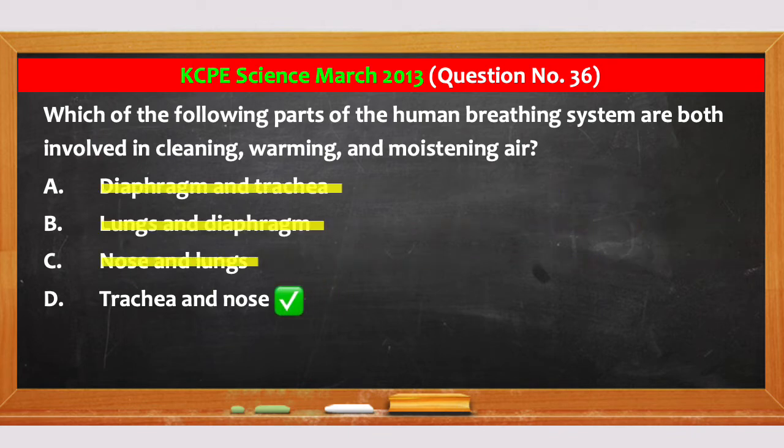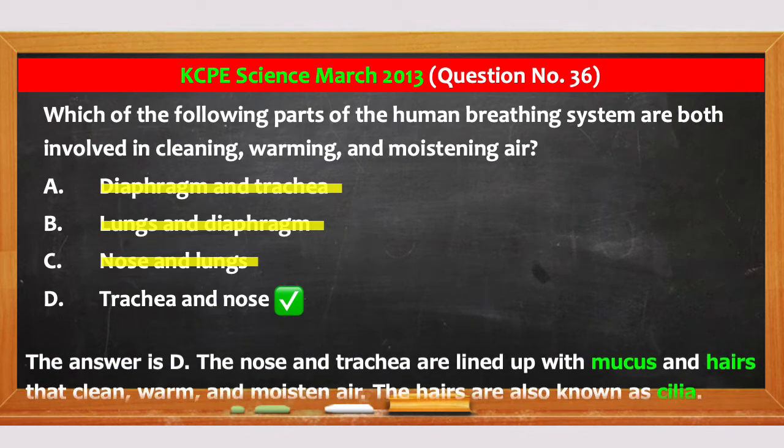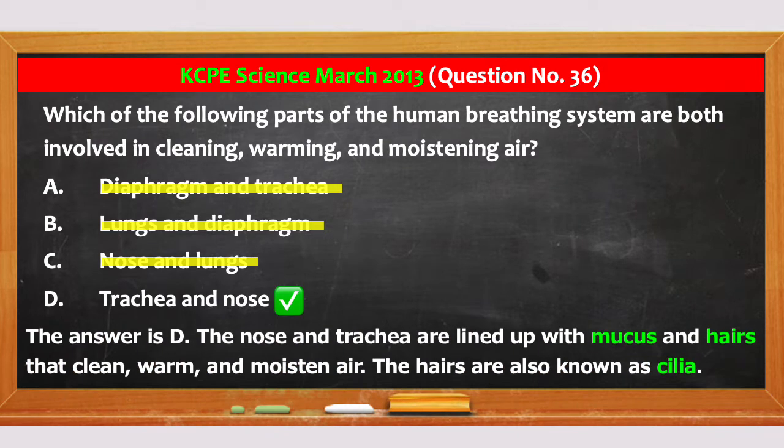The answer is D. The nose and trachea are lined with mucus and hairs that clean, warm, and moisten air. The hairs are also known as cilia.